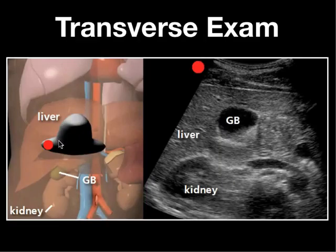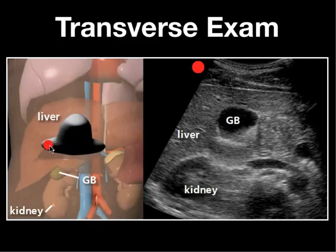What about the transverse exam? Whether you start in the sagittal or transverse plane is personal preference. If you start in the transverse plane, you're going to be in the subcostal region at about the midclavicular line, with the indicator towards the patient's right — anterior, posterior, patient's right, patient's left. Here you've got the liver and the right kidney. The gallbladder is going to be anterior and medial to the superior pole of the right kidney.